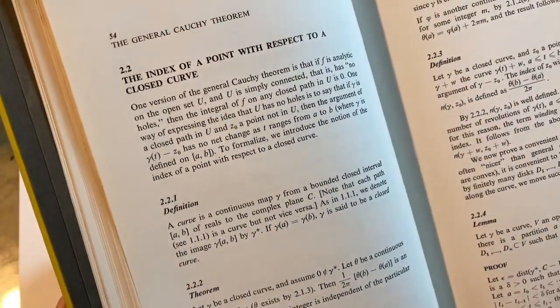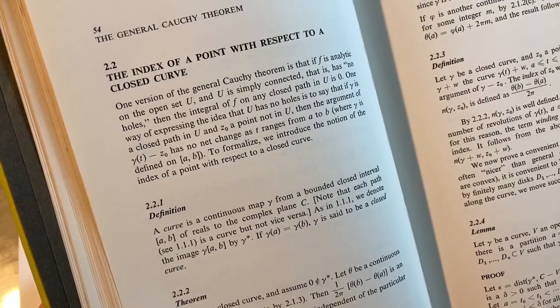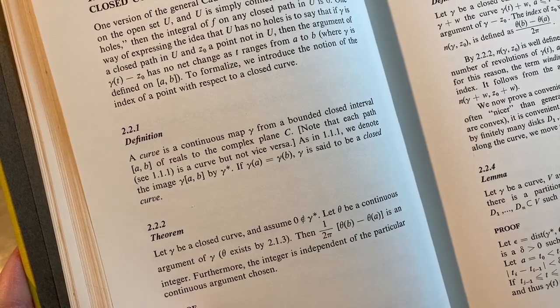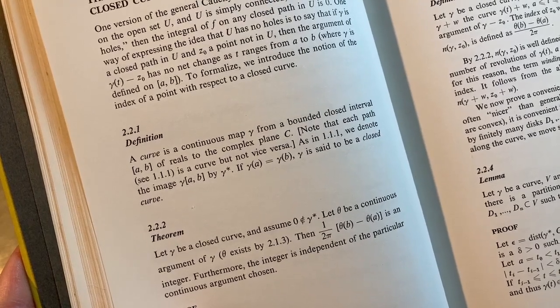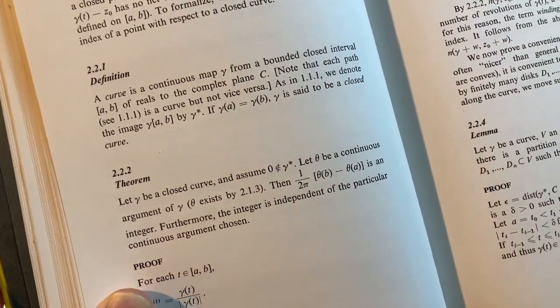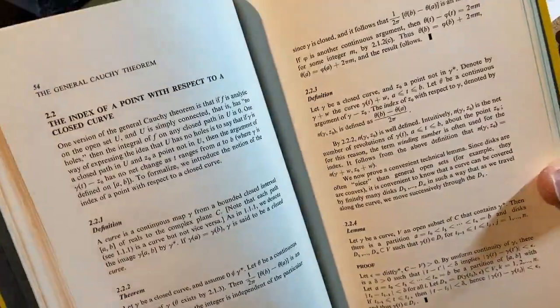So you can see here the outline, how the book reads, the index of a point with respect to a closed curve, got a definition, curve is a continuous map, gamma from a bounded closed interval, a, b of reals to the complex plane, c. And there's a theorem and he gives a proof, right? It's clean, a clean layout. It's a clean book, clean mathematics.